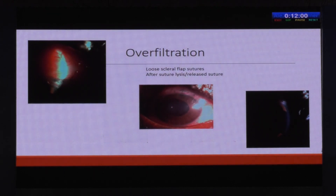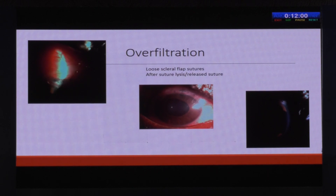The other important cause is over-filtration. Unlike in bleb leak where the Seidel's test is positive, here the Seidel's is not positive. You see a large overhanging bleb. The most common cause is loose scleral flap sutures — if not tied tight enough, there can be excessive flow resulting in over-filtration. Another cause is early suture lysis: if sutures are released when pressure is slowly rising, there can be a drop in intraocular pressure resulting in hypotony. The chamber will be very shallow, there will be a large diffuse bleb, and the Seidel's is negative.